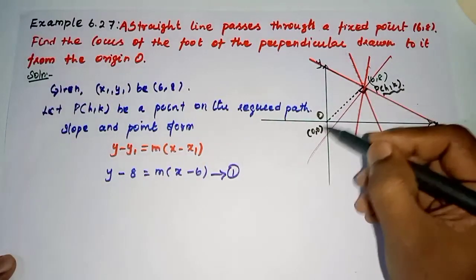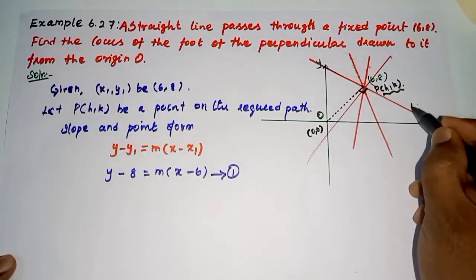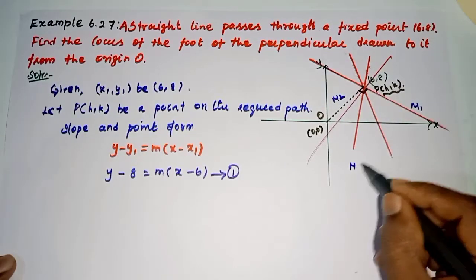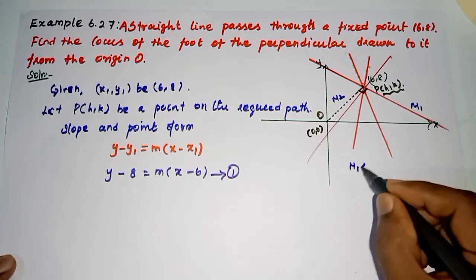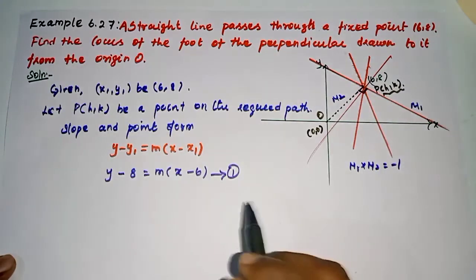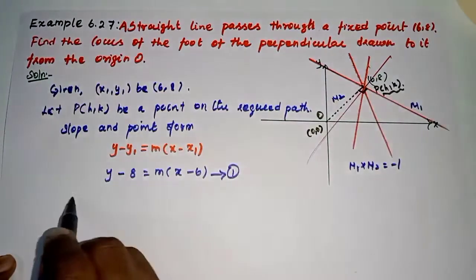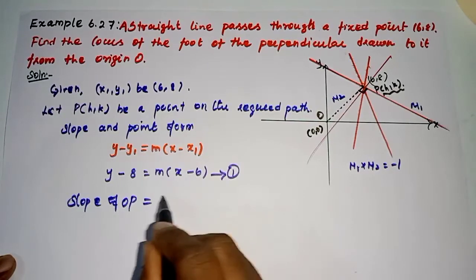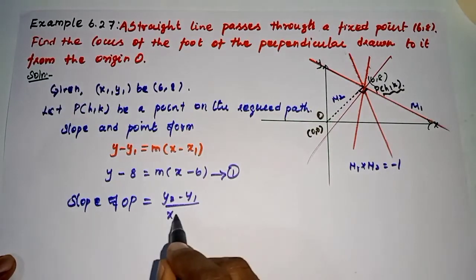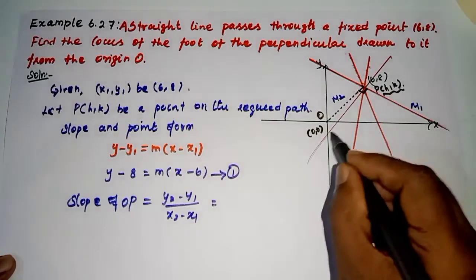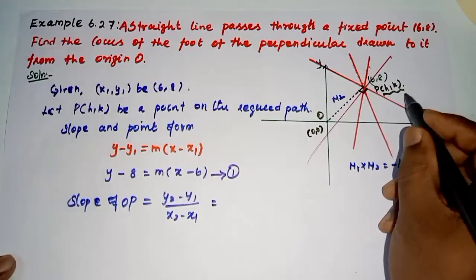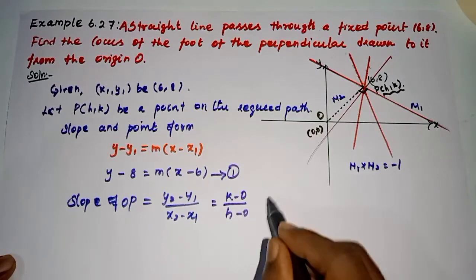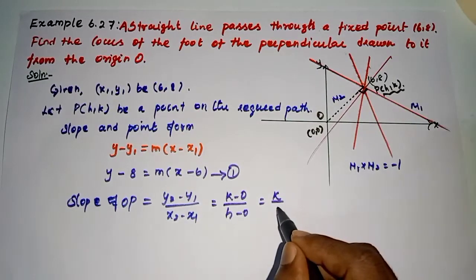And this line is perpendicular. So this slope value is m₁, and the perpendicular line slope is m₂. The slope of two perpendicular lines is -1. Anyway, let's find the slope of OP. Slope of OP = (y₂ - y₁)/(x₂ - x₁). From origin to (h,k): (k - 0)/(h - 0). Finally, we get k/h.